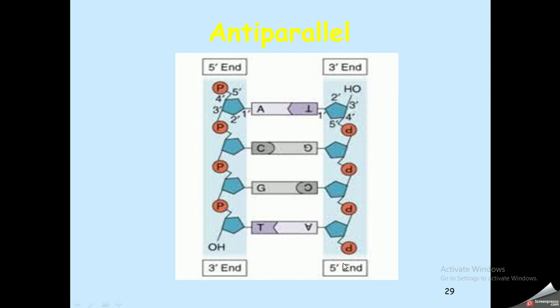The two strands are antiparallel — one strand runs five-prime to three-prime, and the other runs three-prime to five-prime. When we read or write the sequence of any DNA, we write it as a polymer of nucleotides from five-prime to three-prime.